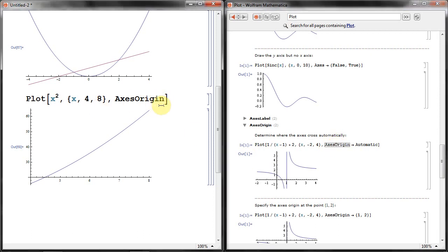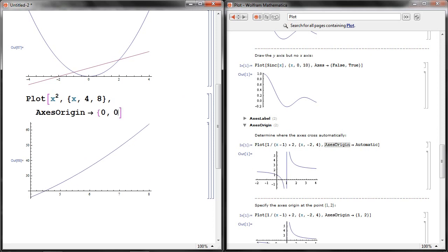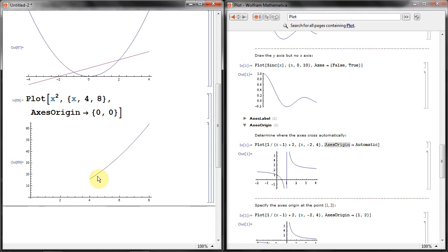And I want the axes origin to be at, let's say, 0 comma 0. And shift and enter. Now we can see the graph is completely above the Y axis, and the crossing point of the two axes are actually 0 and 0.